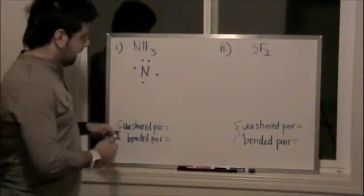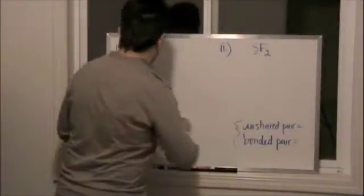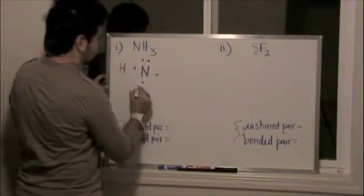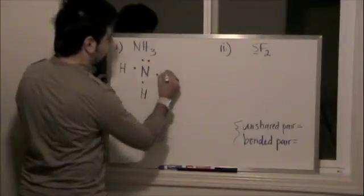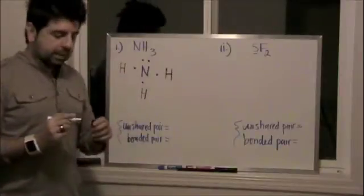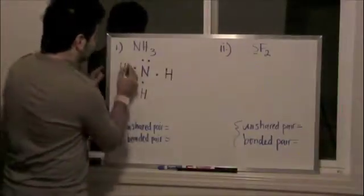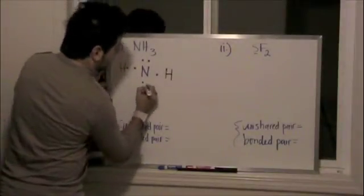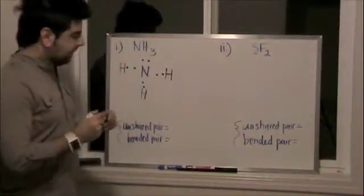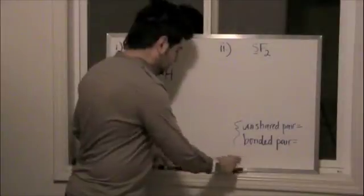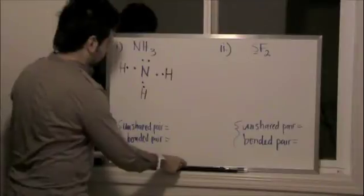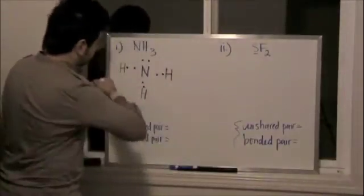So we're going to have nitrogen, and we're going to have hydrogen. We're going to draw hydrogen at each end of wherever we have the single lonely pair of valence electrons for the nitrogen. And each hydrogen atom has one valence electron. And with that one valence electron, we are going to form a bond.